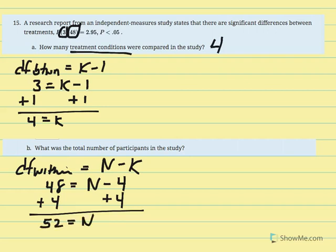When given this type of problem, you'll be given a concluding statement of significance. Recognize that the first DF pertains to degrees of freedom between and the second DF pertains to degrees of freedom within. From those you can solve for the number of conditions or treatments and the total number of participants across all conditions.